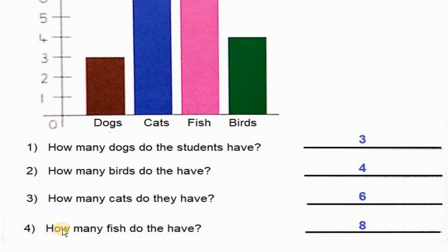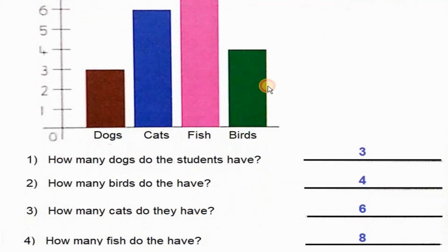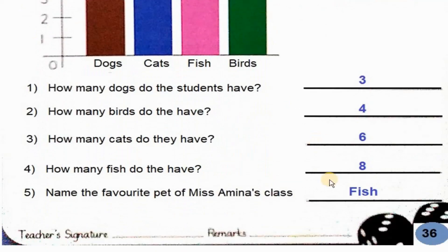How many fish do they have? Fish की तादाद कितनी है? या students के पास fish जो है वो total कितने है? Fish — so eight.